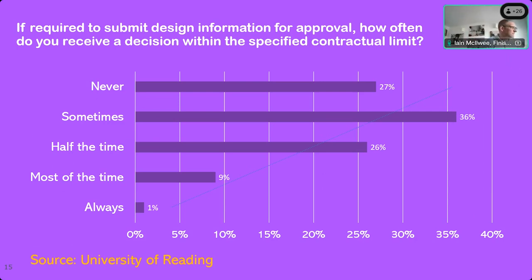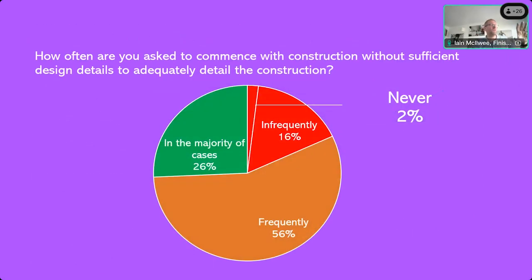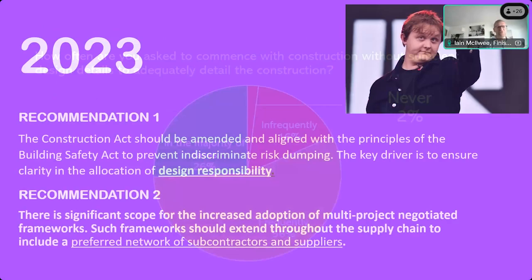I often hear people talking about the days when we had a clerk of works — but the clerk of works we miss is the 'should be right' guy who'd say 'don't worry, move on.' Now everyone is more aware of risk, the professional indemnity insurance market has tightened, and that part of our culture is under severe strain. When asked how often dry-liners are asked to commence construction without sufficient design details, only 2% said 'never' — essentially meaning: build a wall, I don't know which wall, just get on site and start building something.